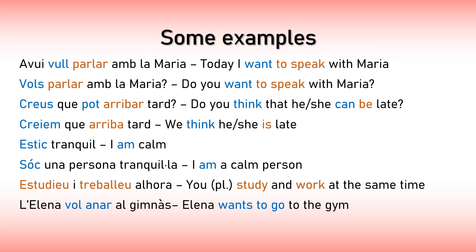The letters in blue indicate regular verbs, and the letters in brownish indicate irregular verbs. Here's an example sentence: 'Avui vull parlar amb la Maria' — Today I want to speak with Maria. 'Vull' is conjugated in the present first person singular, so: I want, and then 'parlar', which is the infinitive. Today I want to speak with Maria.